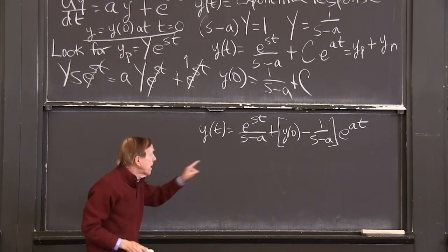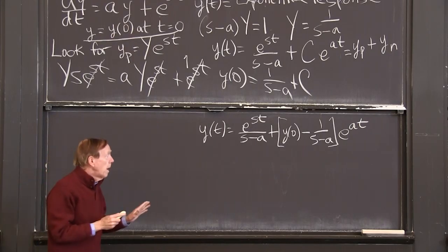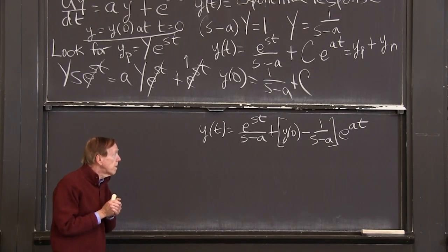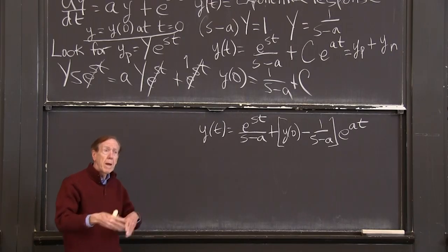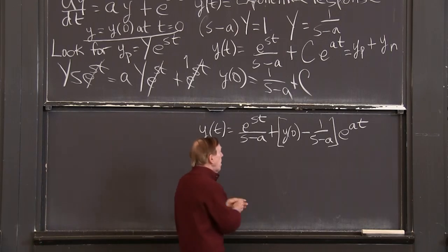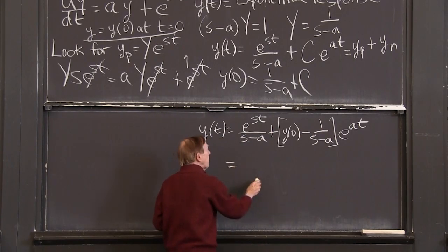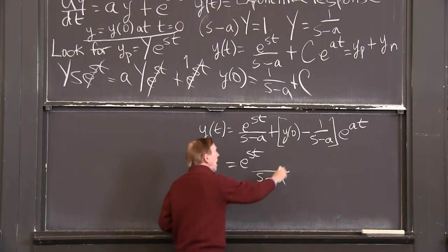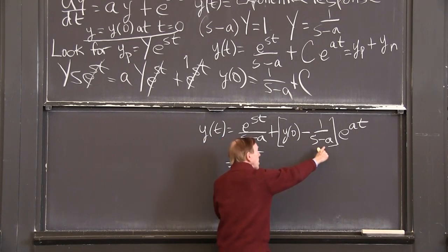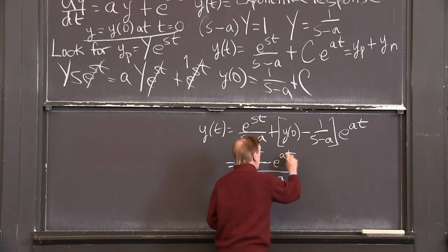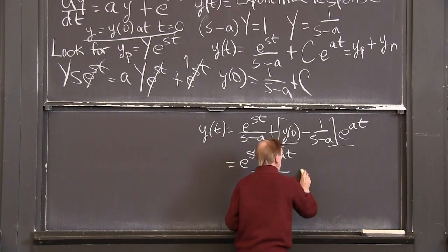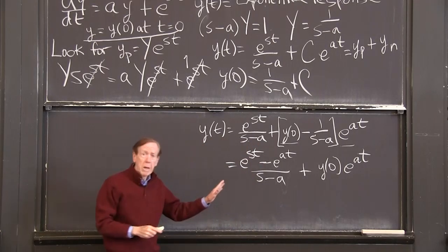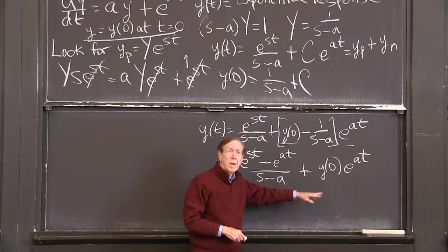That's our answer. I can make it look a little nicer. I want to separate out the y(0) part, the part that's just growing from the initial condition, from the part that is coming from the source term. So I just want to put that together with this. So I have the same (s-a) below. So here is an e^(st) above, and I have a minus, that 1 over (s-a) times e^(at). And then I have this term, which is growing. This is really good.